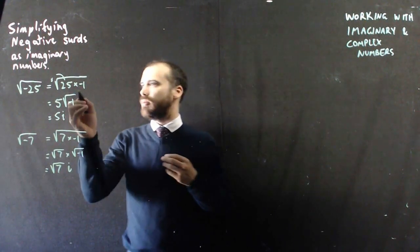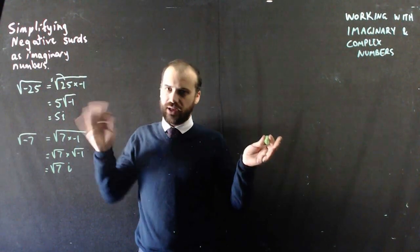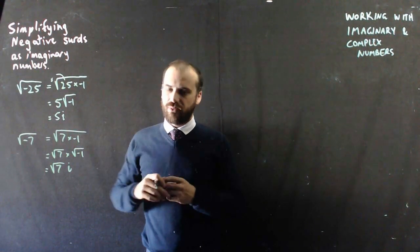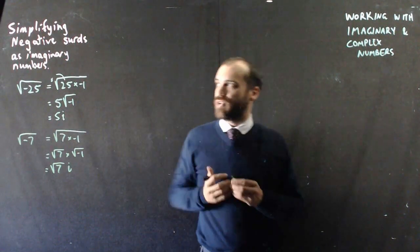Just a takeaway: break off the negative 1, leave everything else, work with everything else as you normally would, and that negative 1 is going to end up being an i. So that's simplifying negative surds as imaginary numbers.